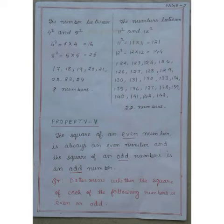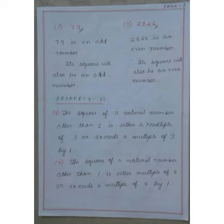The square of an even number is an even number and the square of an odd number is an odd number. Here I have given one question: Determine whether the square of each of the following numbers is even or odd.